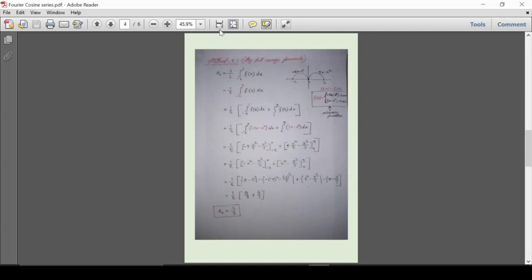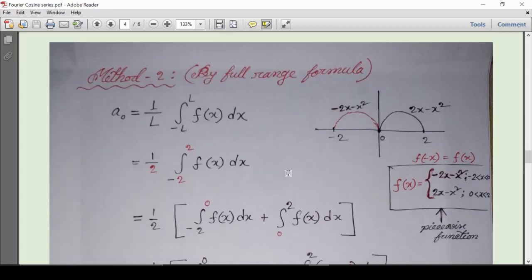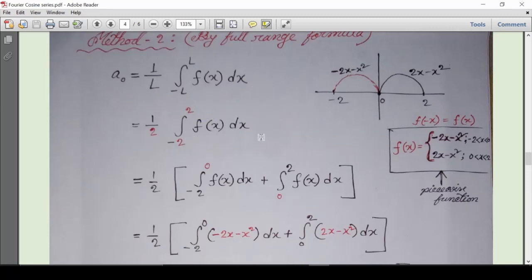Now I am going to show you the alternative method: how we can apply the full-range formula to find the same value of a_0. By now you are very familiar with this formula: a_0 = 1/L times the integral from -L to L of f(x)dx. In last class, I was working with this formula.